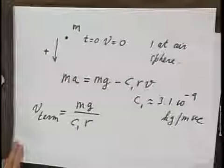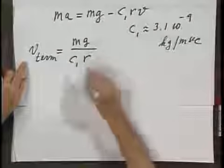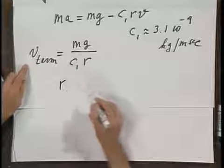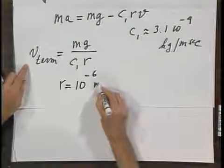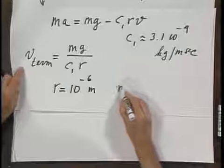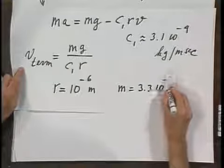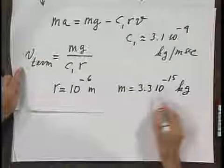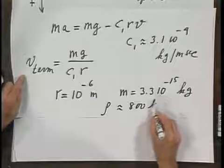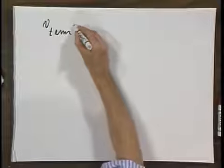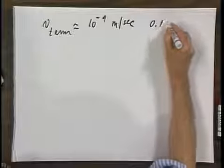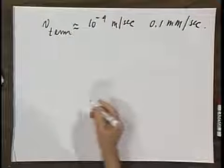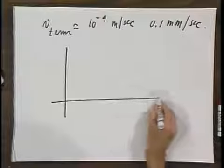This terminal velocity is reached after a certain amount of time. If we take an oil drop with a radius of 10 to the minus 6 meters — which is 1 micron — and the oil drop has a mass of roughly 3.3 times 10 to the minus 15 kilograms, because the density for oil is about 800 kilograms per cubic meter, then we find a terminal velocity of approximately 10 to the minus 4 meters per second, about 0.1 millimeters per second.